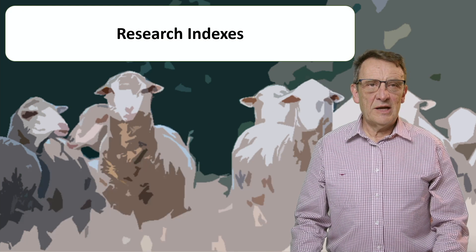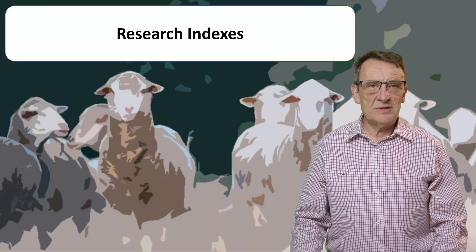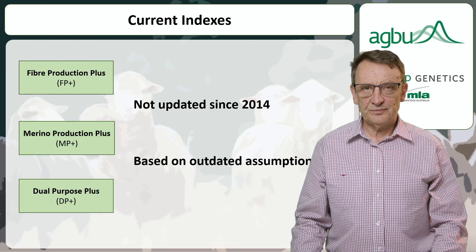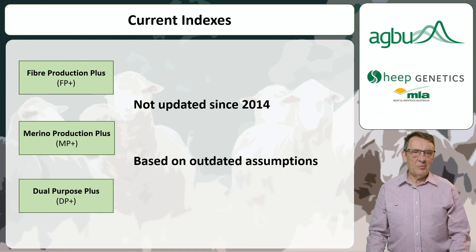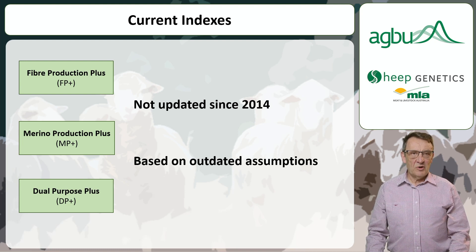Next up we're going to talk about our new approach to building sheep indexes and how it's been used to develop research indexes for Merino Select. For some years now we've had the FP, MP and DP standard indexes covering a range of objectives from wool quality through to land production. But with outdated production and price assumptions, it's clear that an update is necessary.